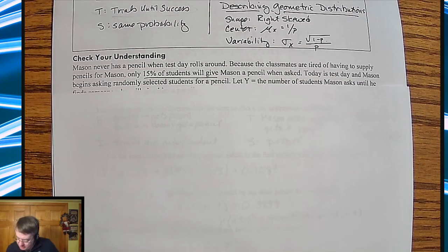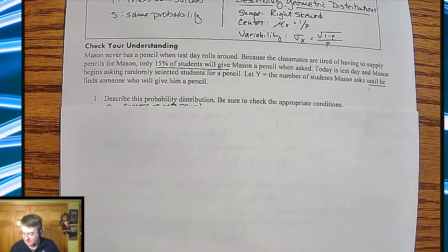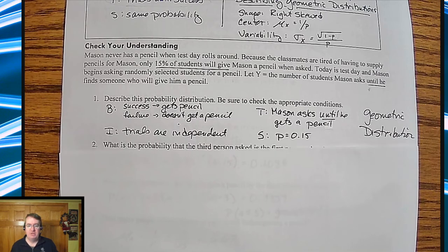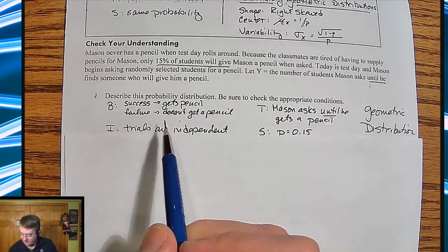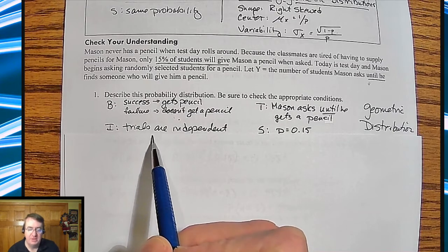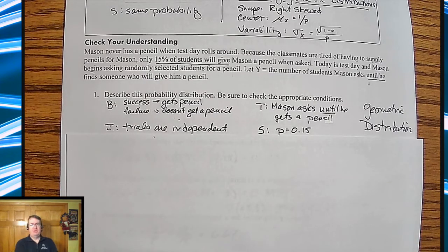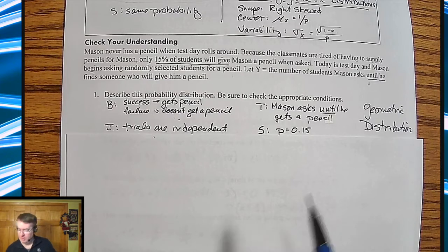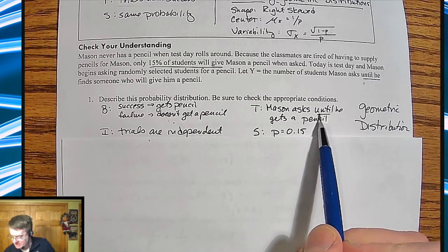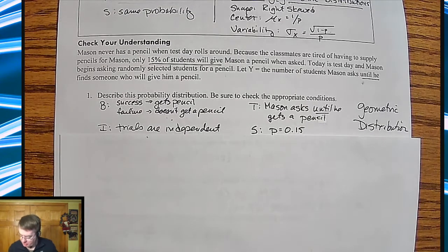The first question is describe the probability distribution. Be sure to check the appropriate conditions. Since it says until he finds someone who gives him a pencil, this is going to go underneath the geometric. We still have success or failure, he gets a pencil or doesn't. All the trials are independent, Mason asks until he gets a pencil, and the probability is 15%. So it is a geometric distribution.